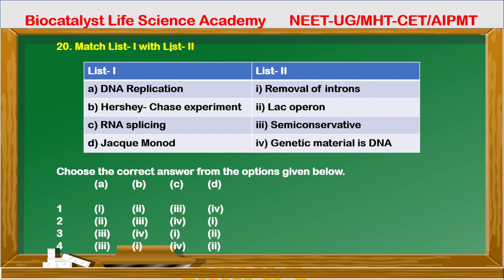Question 20: Match list one with list two. DNA replication is a semi-conservative model — option third. Hershey-Chase experiment shows genetic material is DNA — option four. DNA splicing refers to the removal of introns — option first. Jacob and Monod discovered lac operon — option second. Matching: A to third, B to four, C to first, D to second. Correct option is option number third.